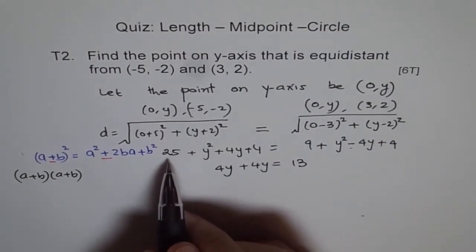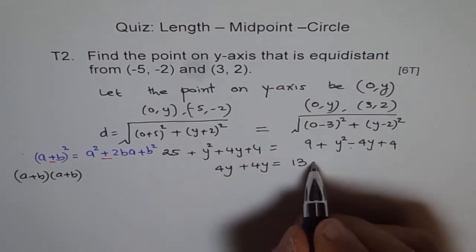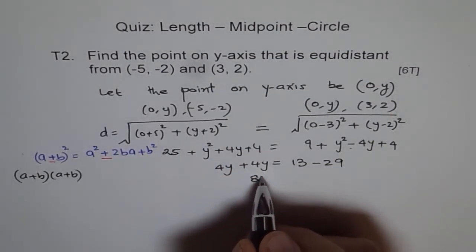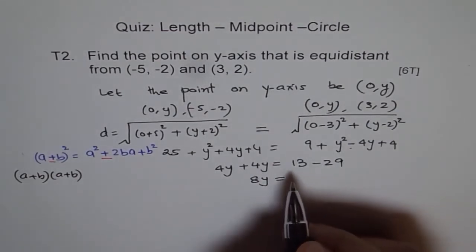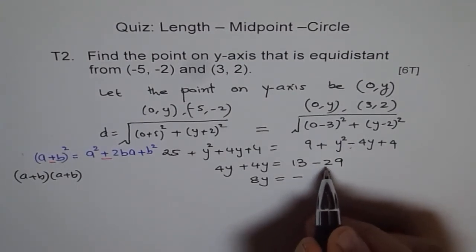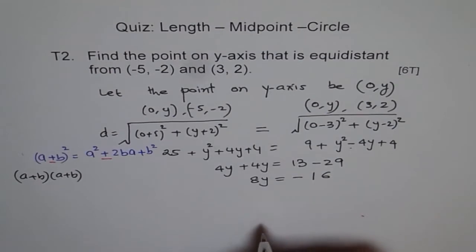4y plus 4y is 8y, and 13 minus 29 is minus. 9 take away 3 is 6, and 2 take away 1, so y equals minus 16 over 8 which is minus 2.